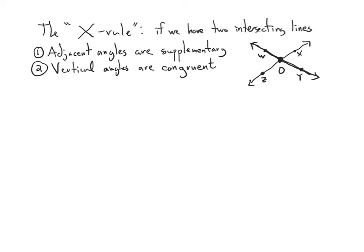The first thing says that adjacent angles are supplementary. For example, angle WOZ and WOX — since they're adjacent and share side W — they are supplementary. And vertical angles, like angles WOX and ZOY, are congruent — they have the same measure. Remember, congruent means that they have the same measure.